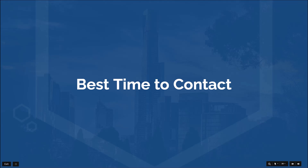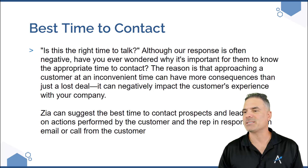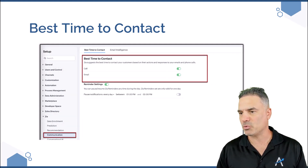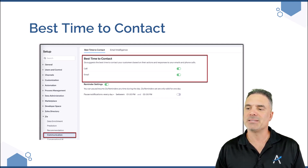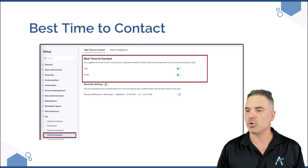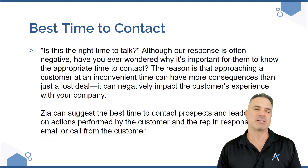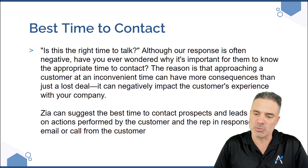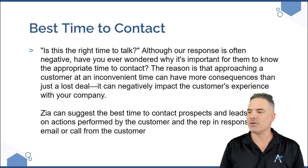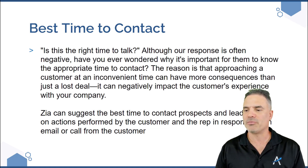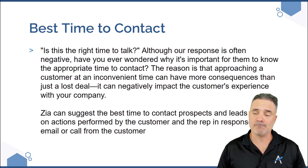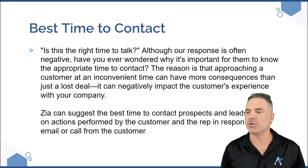Next on the list is best time to contact. There will be many cases where you try to chase leads, clients, and patients and they will not answer you. If you configure best time to contact — which is under settings, ZIA, communication, best time to call — you will be able to activate it, and then ZIA will tell you when it's the best time to contact those people. ZIA can suggest the best time based on actions performed by the customer and the rep in response to an email or call. I've used it for about a year and most of the time it does its work and it's pretty good.